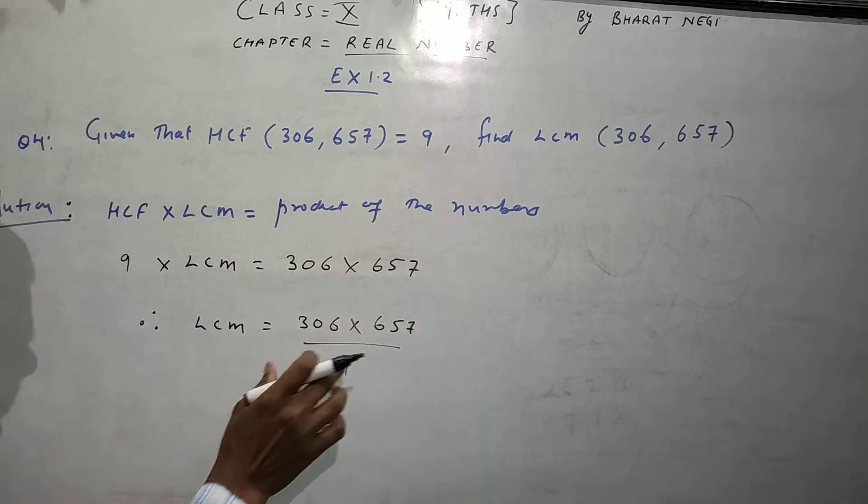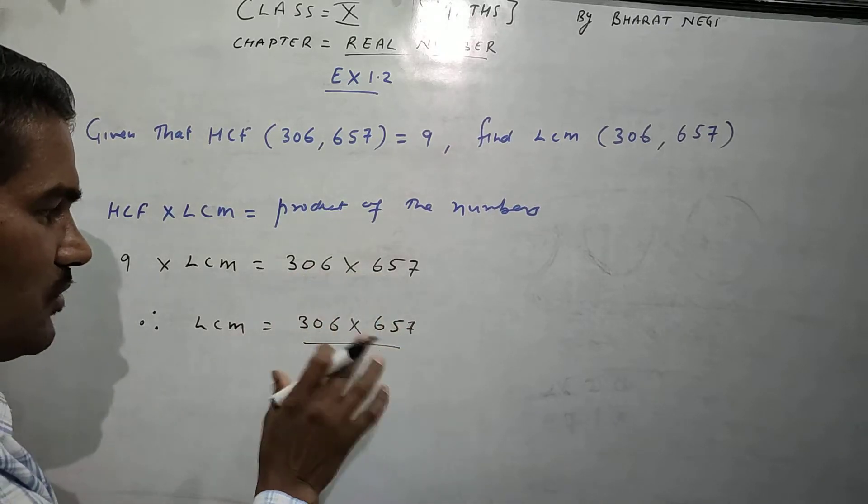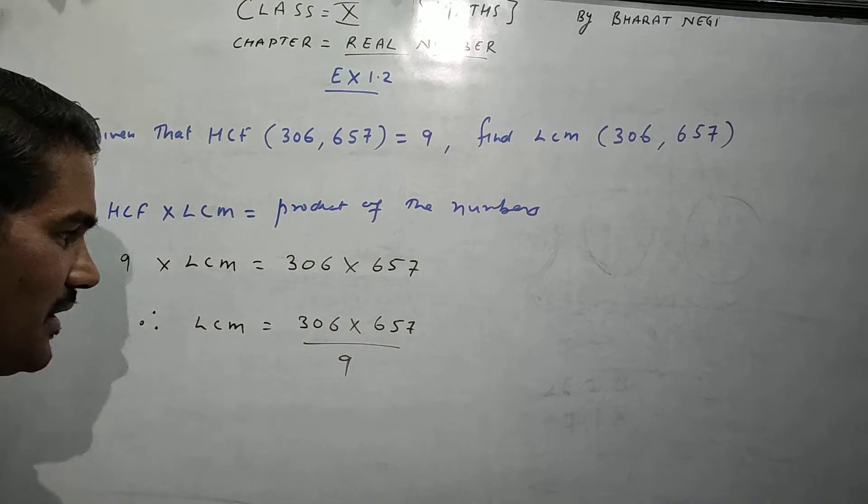Don't multiply this number because we have to divide it by 9. So, when it is already a factor, if we multiply and then divide it will become very tedious. So, we don't have to do this.